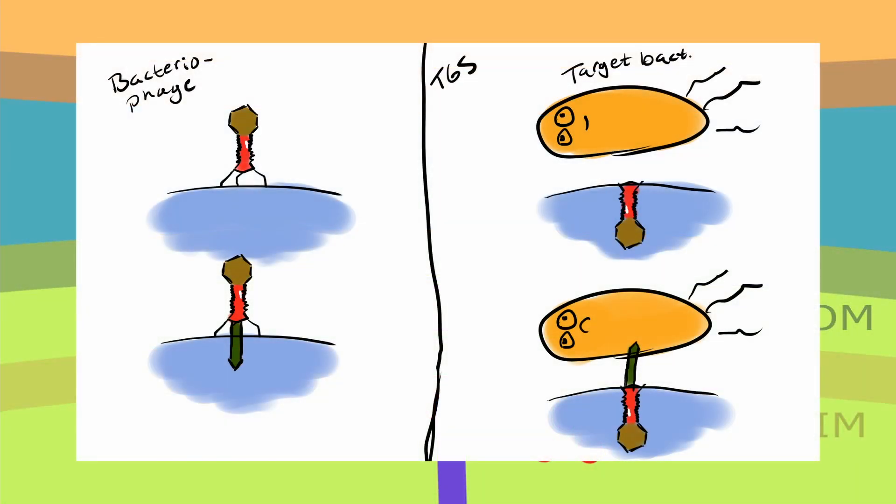The type 6 secretion machinery can be thought of as an inverted bacteriophage. This picture tries to illustrate this where the bacteriophage could be imagined being inside the bacteria and poking its protrusion out, almost like the secreting bacteria is poking out a sword or something to attack its target.